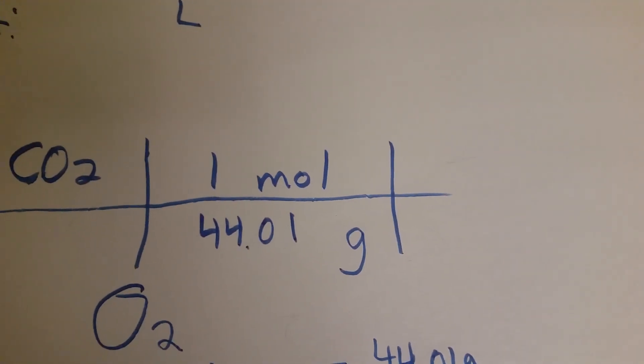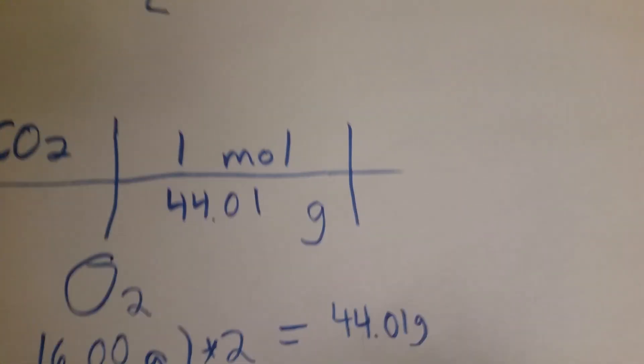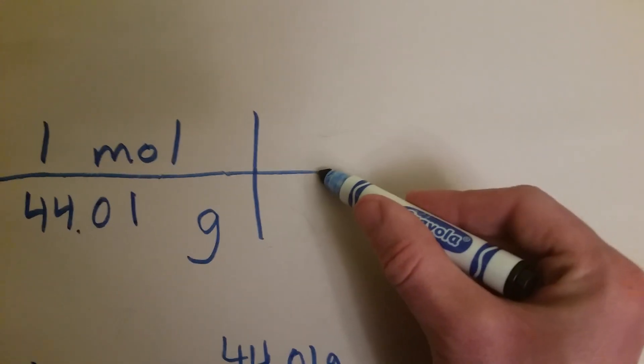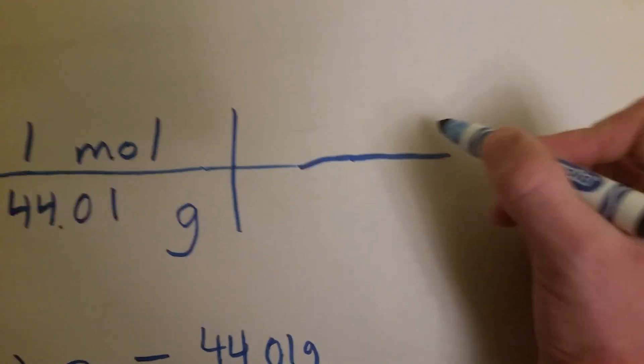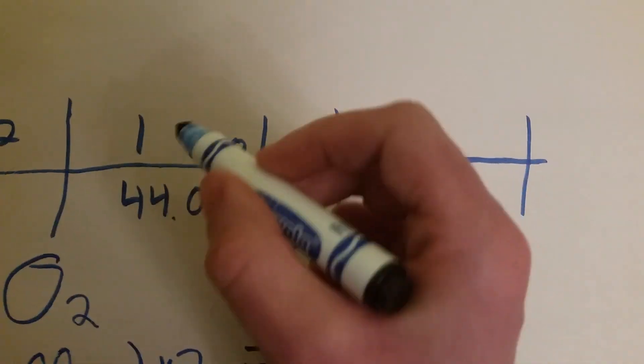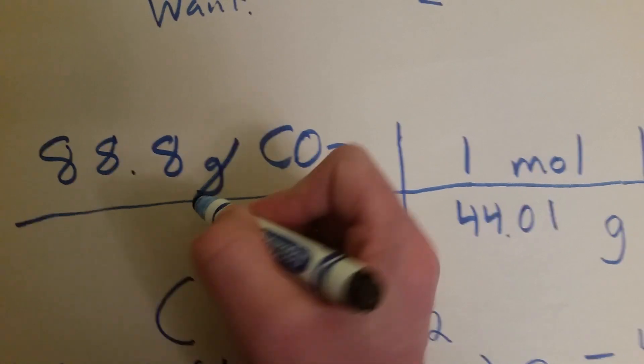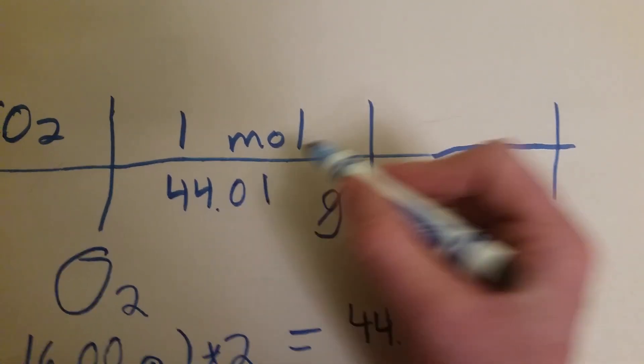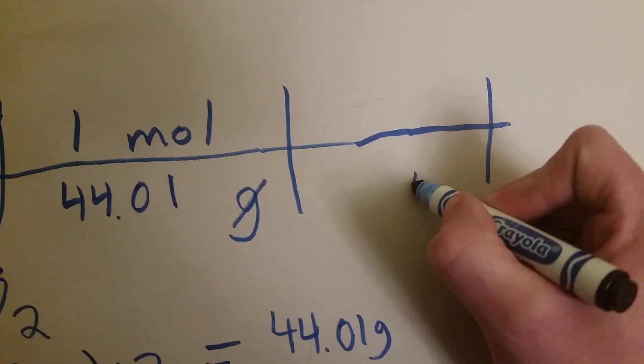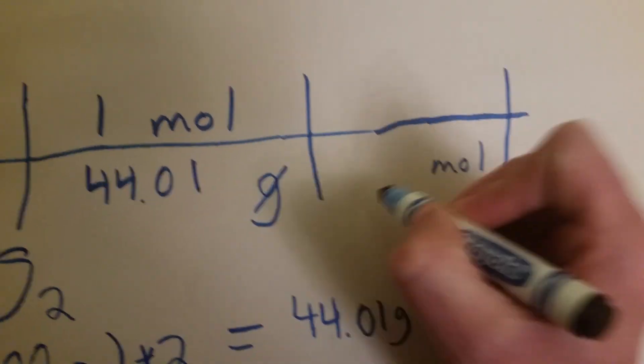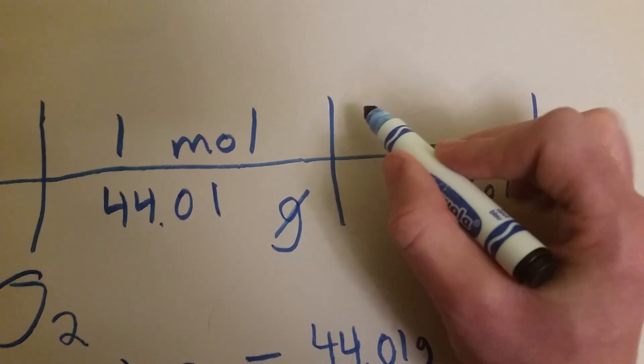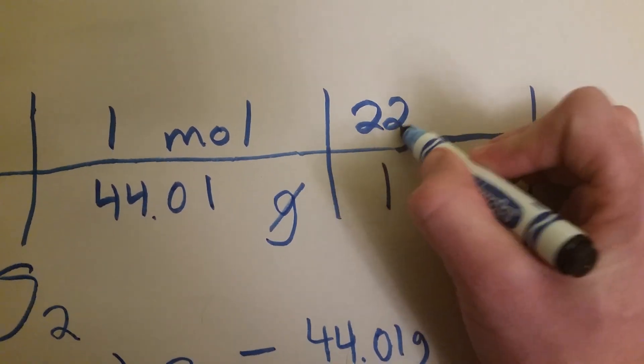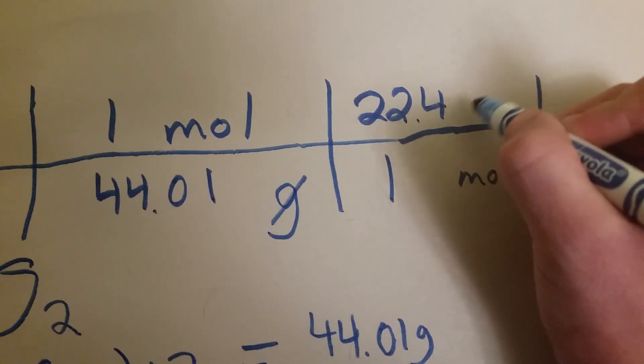And now, we want liters. We're still only at moles. We better do something different. And since we're at STP, we know exactly what to do. Well, let's first here. Grams cancel. That's great. Got moles up here. Which means we need moles down here. And we know one mole equals 22.4 liters.